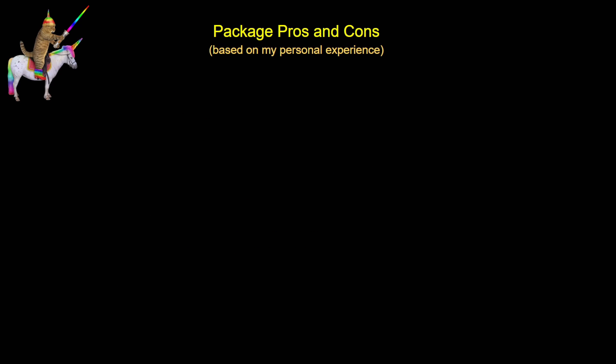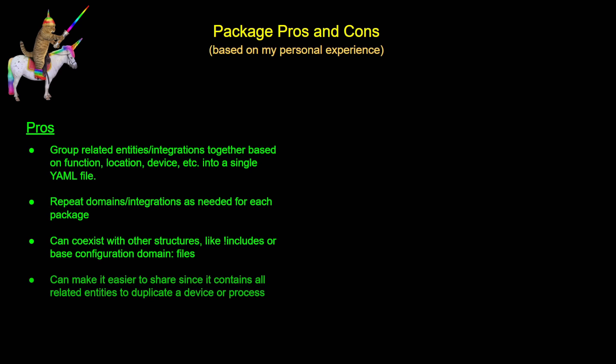Based on my own personal experience — I've moved everything out of split configuration almost solely to packages a couple of years ago — here are some things I see as both the pros and the cons. When it comes to the pros, it is nice because I can group a lot of entities, automations, and scripts together around any topic. I can put everything related to my matrix clock, or a particular area or room in my house, or my garage lights, into one file. It does allow you to repeat those domains or integrations as needed for each of your packages.